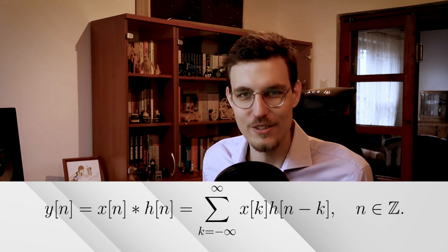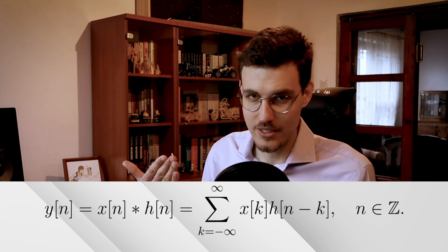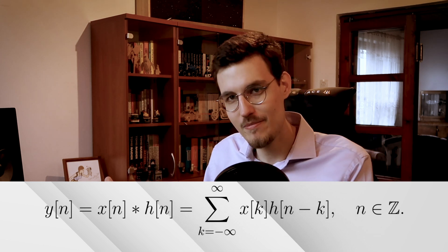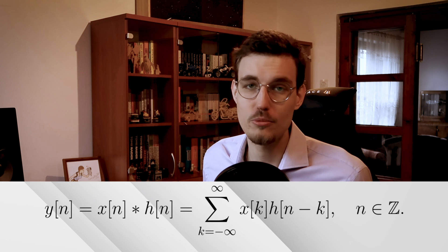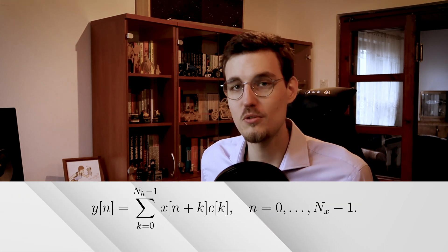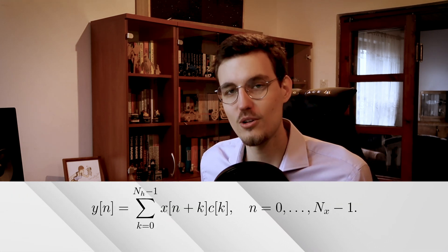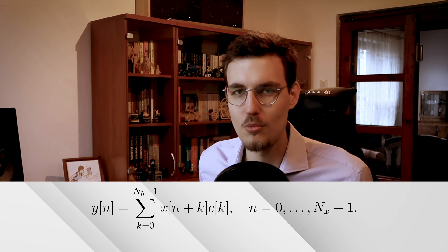The convolution formula involves inverting one of the signals in time, shifting it in time, and then calculating an inner product of the resulting vectors. As you may imagine, infinite sums are not very practical for implementation. Neither is inverting a signal in time. For these reasons, we'll rewrite the convolution formula to be a little bit more practical.